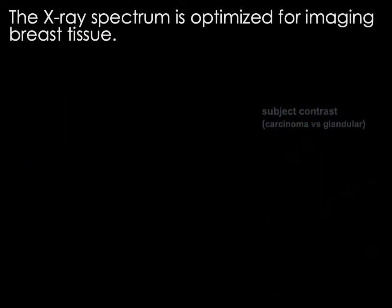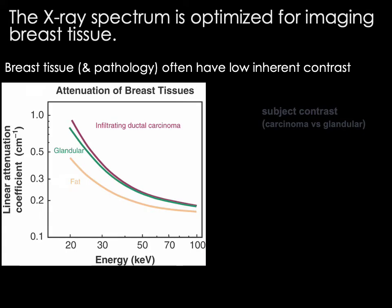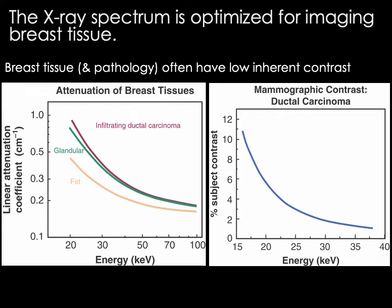The x-ray spectrum is also optimized for imaging breast tissue. Breast tissue and pathology often have low inherent contrast, demonstrated by a plot showing the linear attenuation coefficient of various tissues as a function of energy. To maximize contrast, we use the part of the spectrum where differences in linear attenuation coefficient are greatest, which occurs at low energies. We still need energies high enough to adequately penetrate breast tissue and reach the detector. Therefore, we use lower energy x-rays for mammographic imaging than in general radiography — around 24 to 42 kVp.